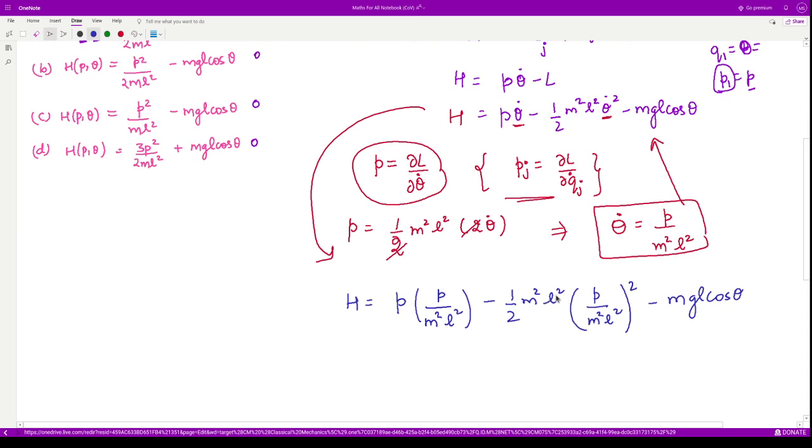So when you simplify this thing, one m square l square will cancel out. So this term would be similar to this except for this coefficient half. So we would have h is equal to 1 by 2 p square divided by m square l square minus m g l cos of theta. So this is our answer.